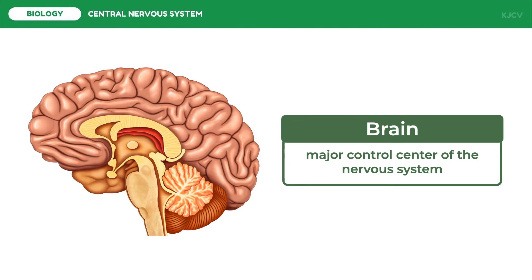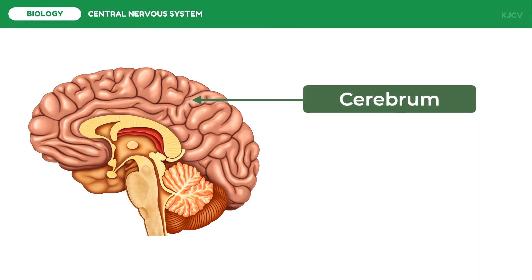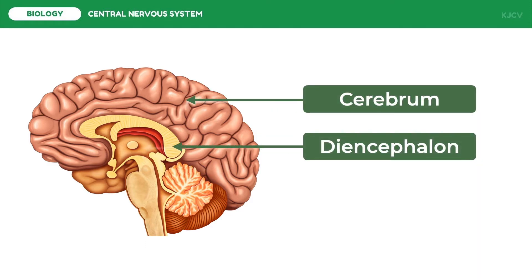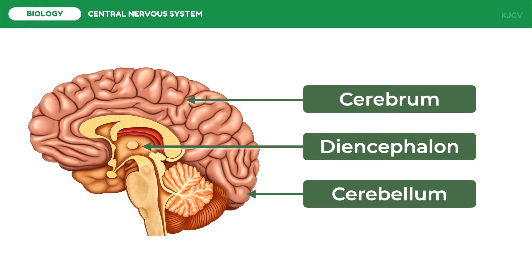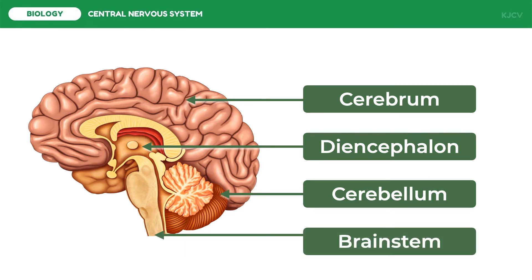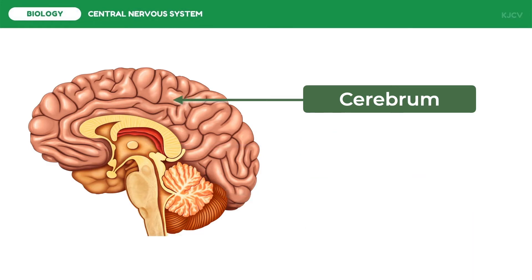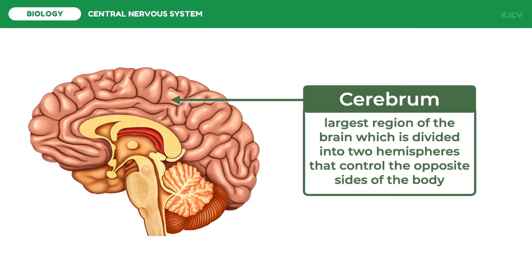The brain has four very complex parts: the cerebrum, the diencephalon, the cerebellum, and lastly the brain stem. The cerebrum is the largest region of the brain, divided into two hemispheres that control the opposite sides of the body. The two hemispheres are connected to each other by the corpus callosum, which is a thick band consisting of an estimated 300 million neural axons.